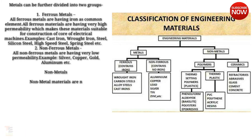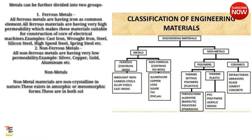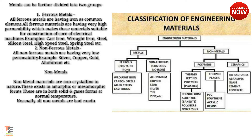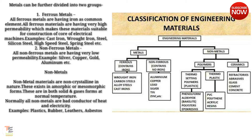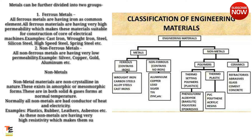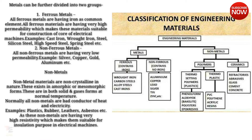All non-ferrous metals have very low permeability. Examples: silver, copper, gold, aluminum, etc. Non-metals are non-crystalline in nature; these exist in amorphic or mesomorphic forms. These are in both solid and gaseous forms at normal temperature. Normally all non-metals are bad conductors of heat and electricity. Examples: plastics, rubber, leather, asbestos, etc. These non-metals have very high resistivity, which makes them suitable for insulation purposes in electrical machines.